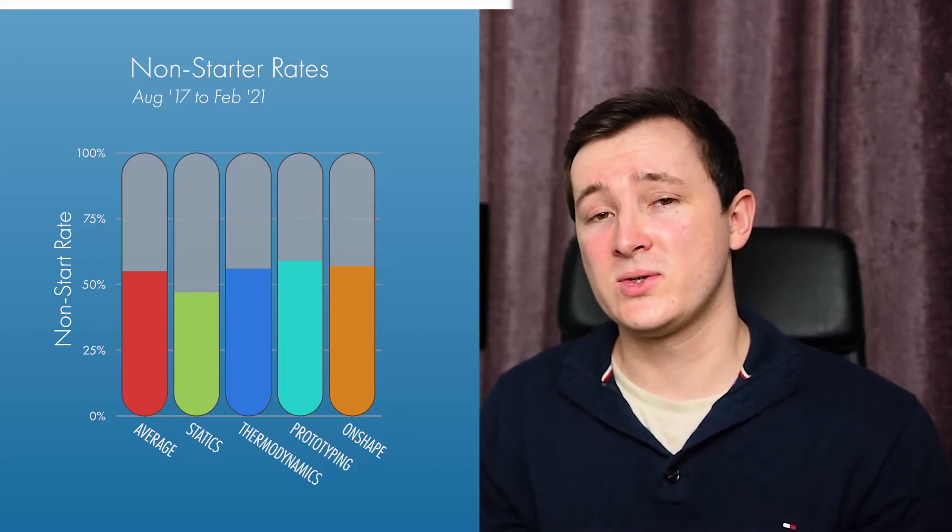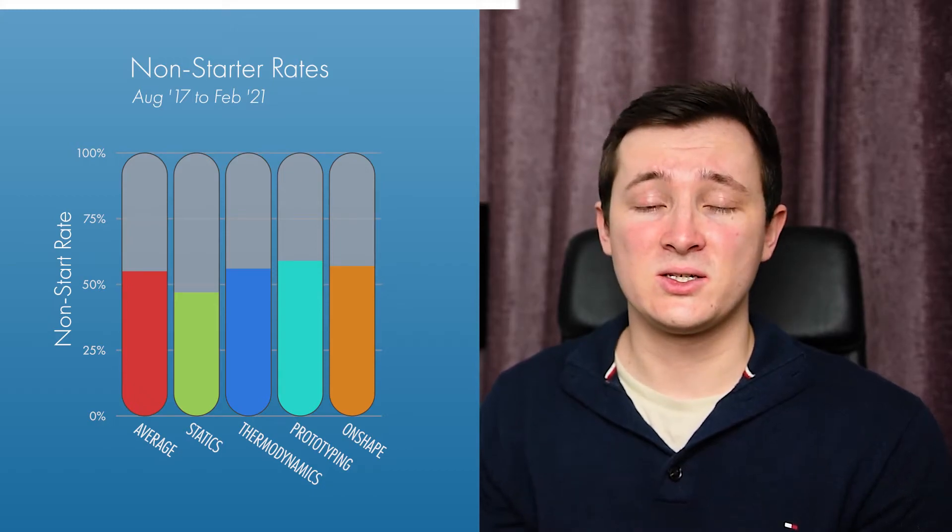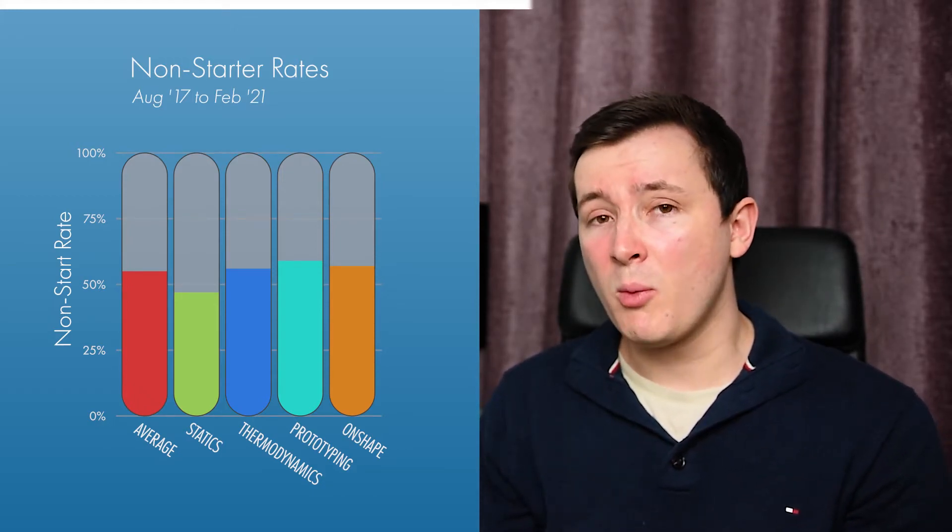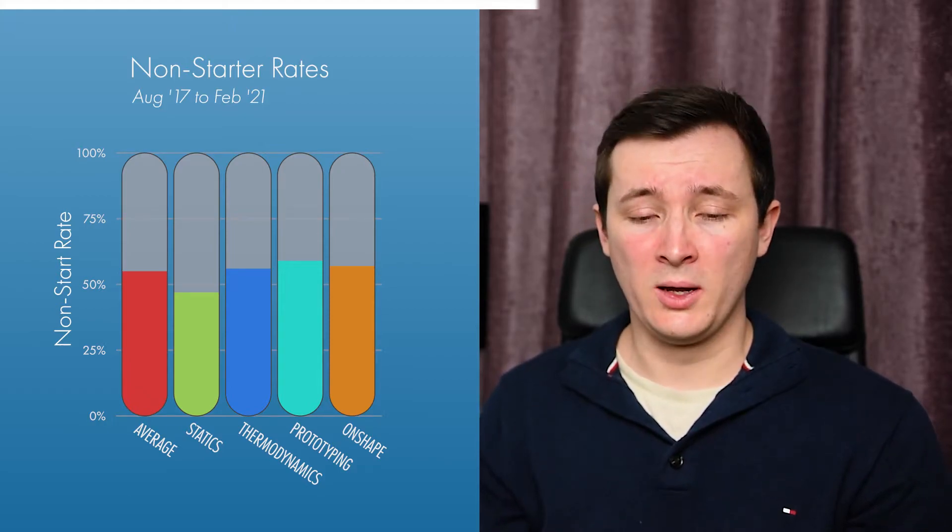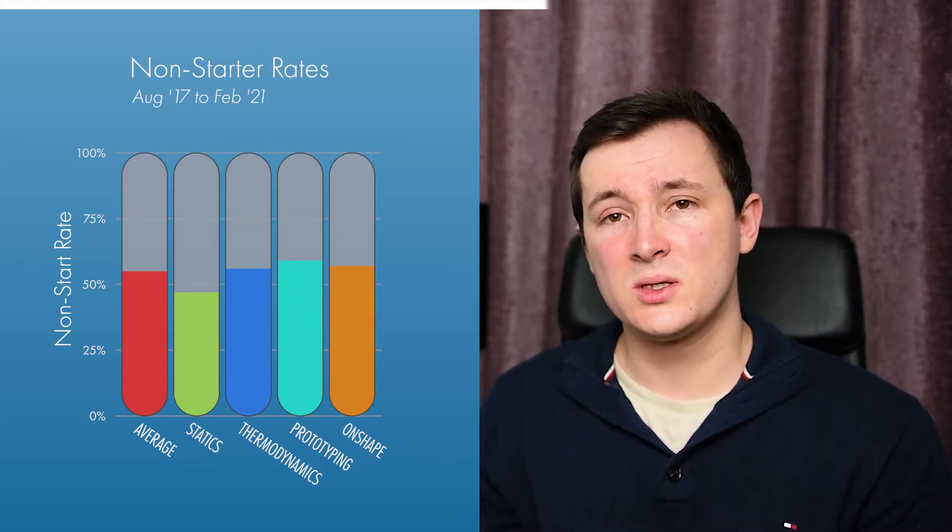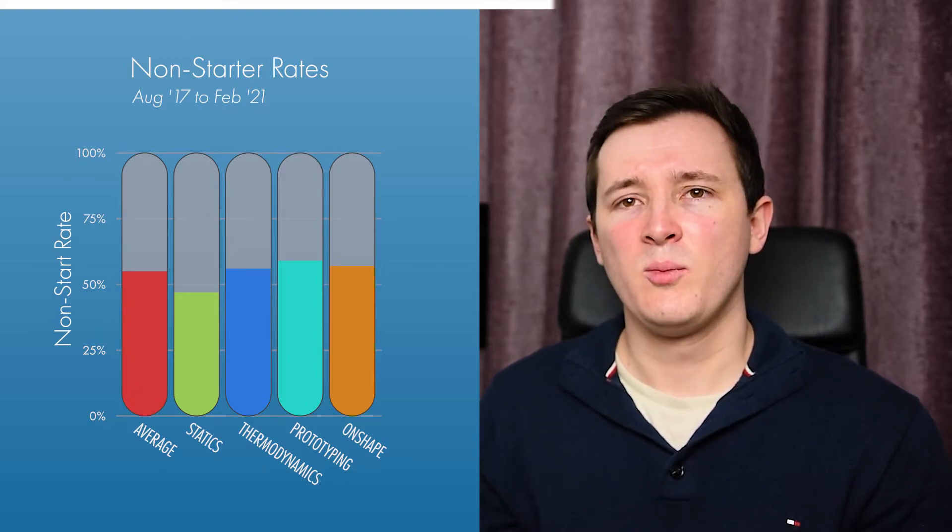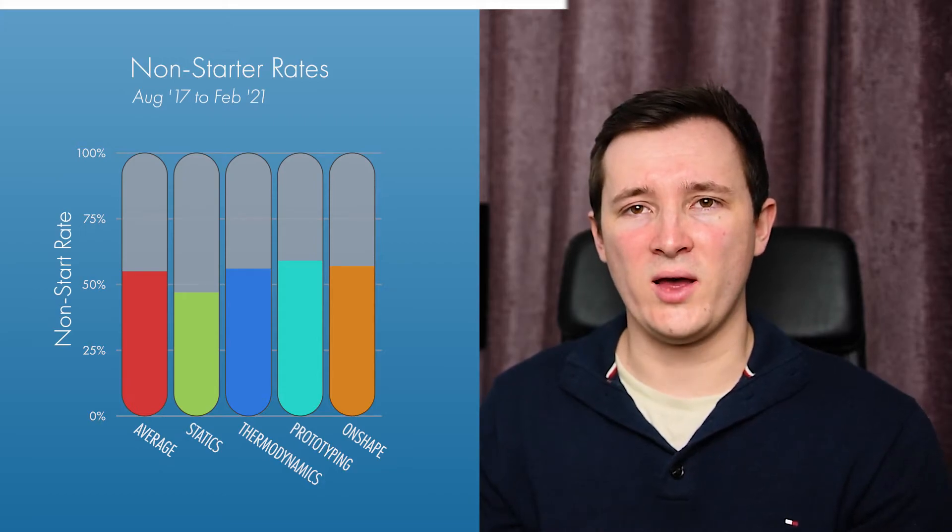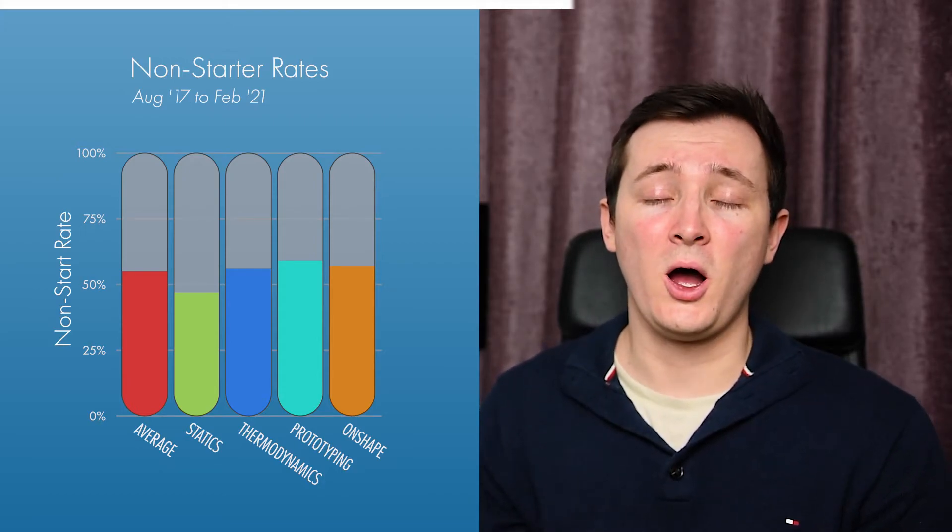We can have a look at the individual courses and you see statics has 47% don't even start rates so a little bit lower by probably a significant margin. So seven percent or eight percent below. It's quite a big difference but then the other three courses are really at that kind of level maybe a few points higher than the average.